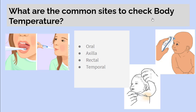What are the common sites to check body temperature? Oral, axilla, rectal, and temporal. Do not use the rectal method if the patient has a risk of bleeding.